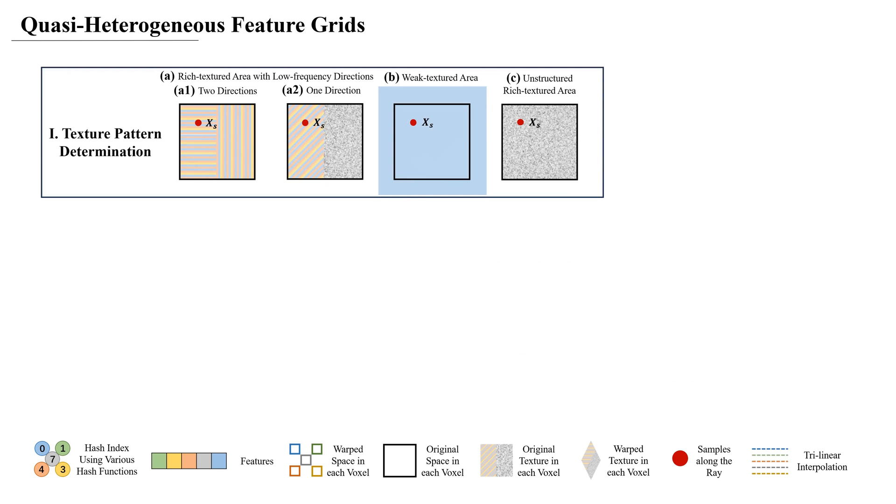Specifically, within each octree's leaf node voxel, we first classify the texture into three categories: first, rich-textured area with low-frequency directions; second, weak-textured area; and third, unstructured rich-textured area.